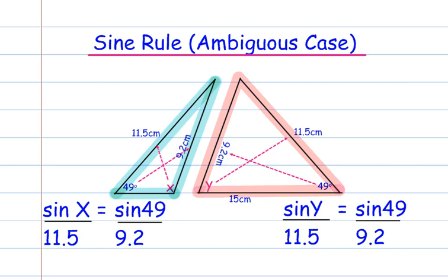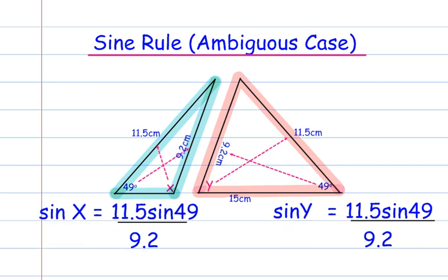When we set up the sine rule, you can see that we have the same equation for both. If I multiply both by 11.5, I would have the same equations again to try and find X and Y.